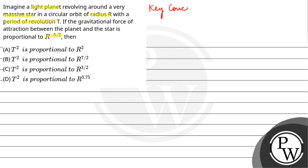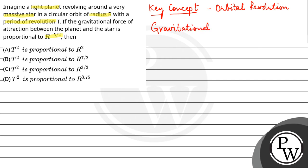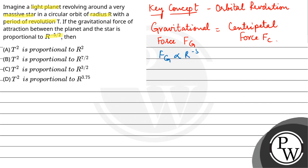So, here our key concept is orbital revolution — the planet revolving around the star — and the gravitational force between the planet and star is equal to the centripetal force Fc. The question states that the gravitational force is directly proportional to R raised to the power minus 5 by 2, which means the centripetal force is also directly proportional to R raised to the power minus 5 by 2.